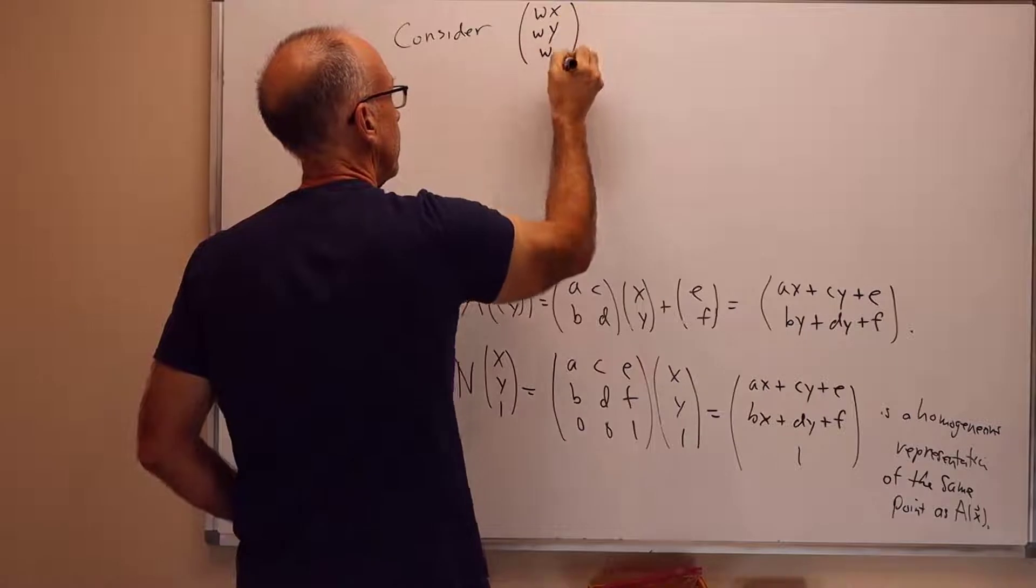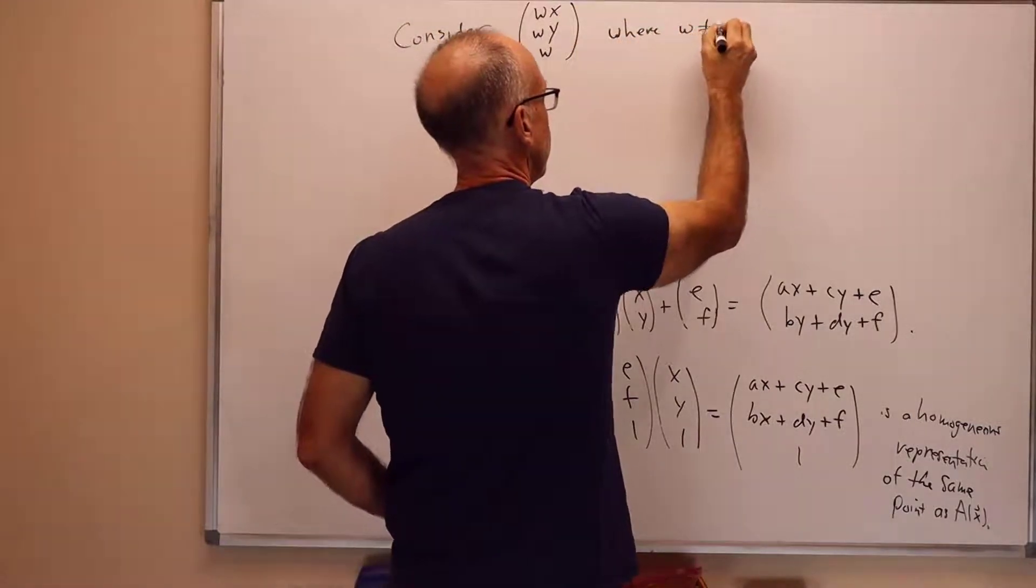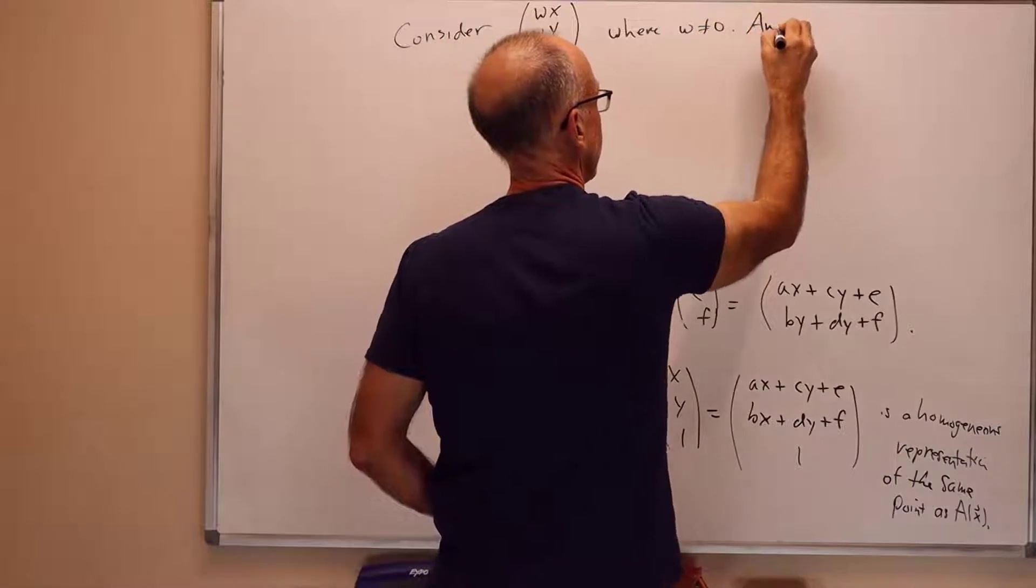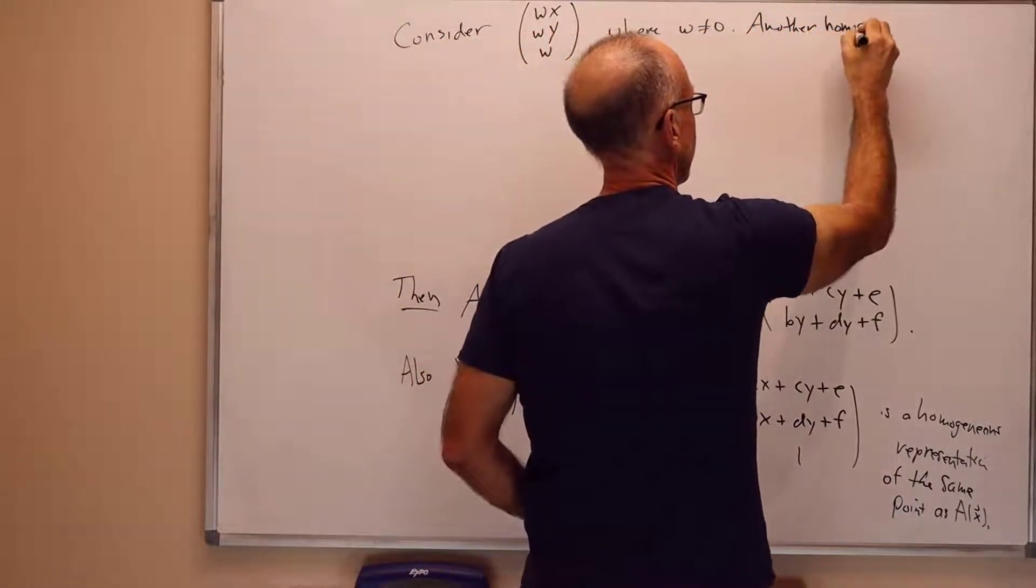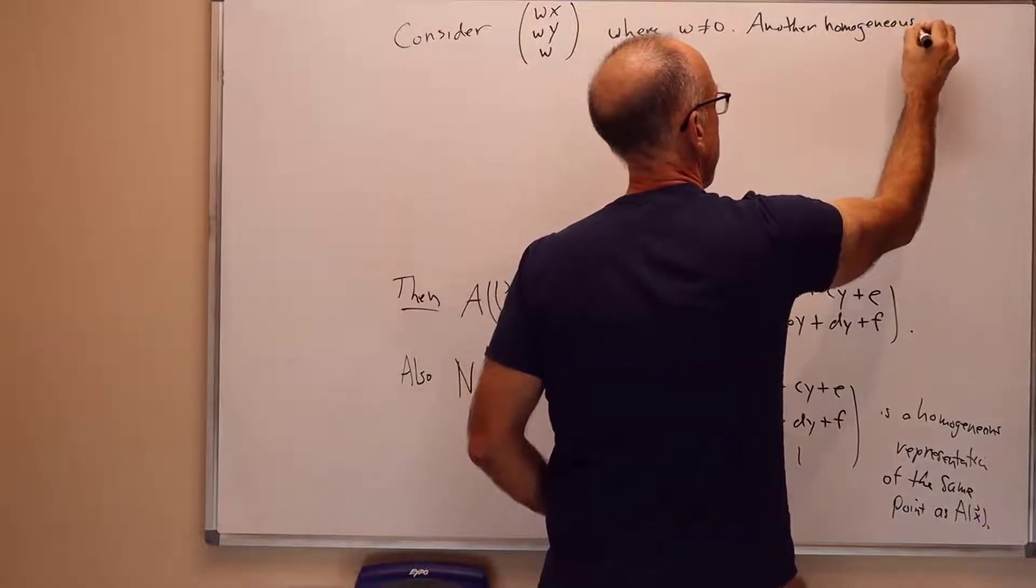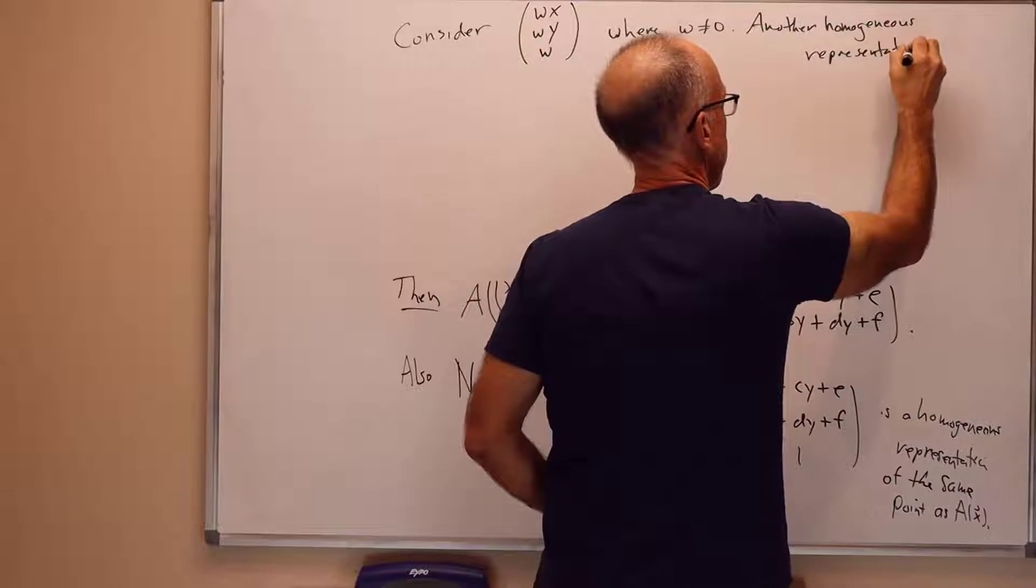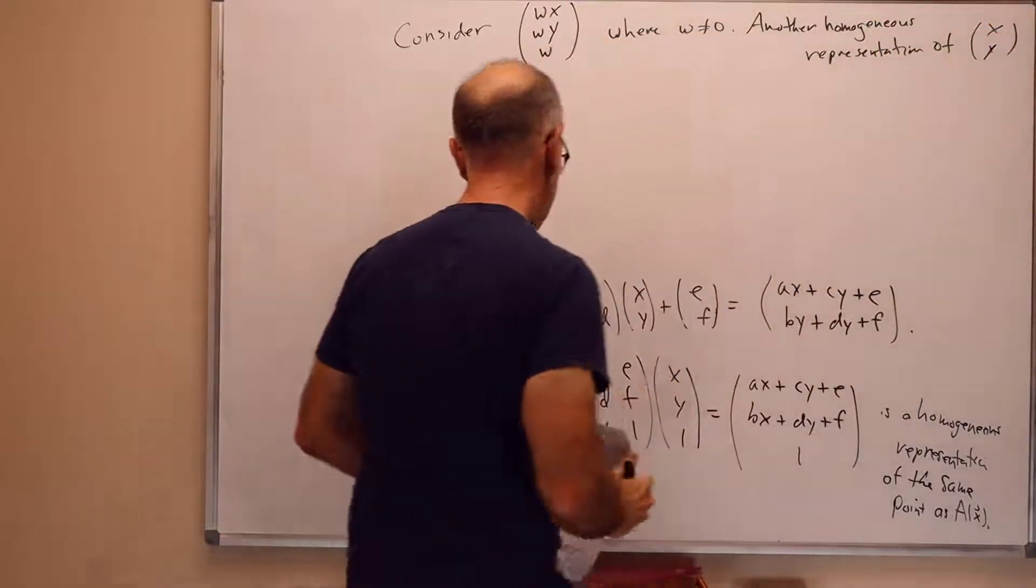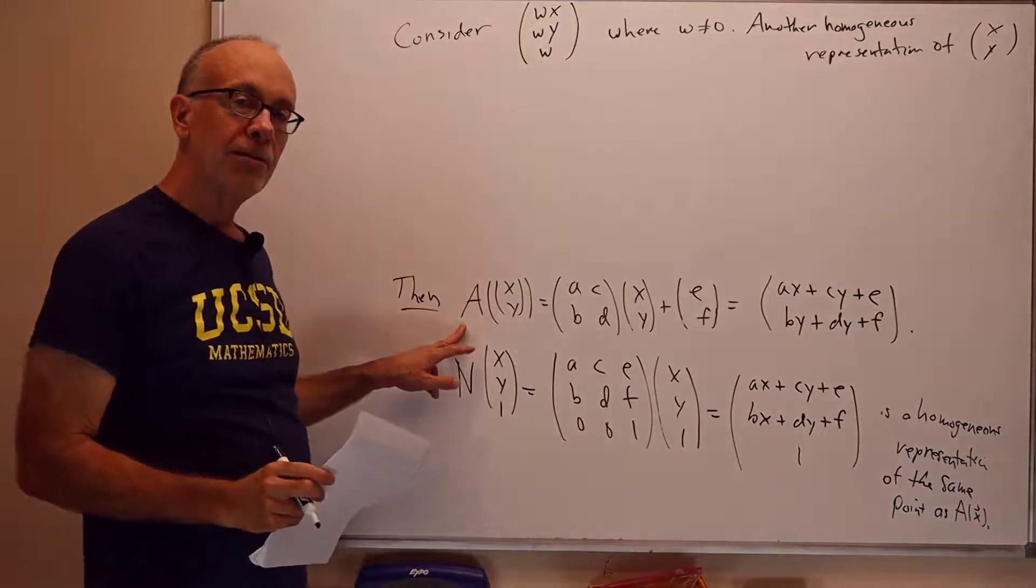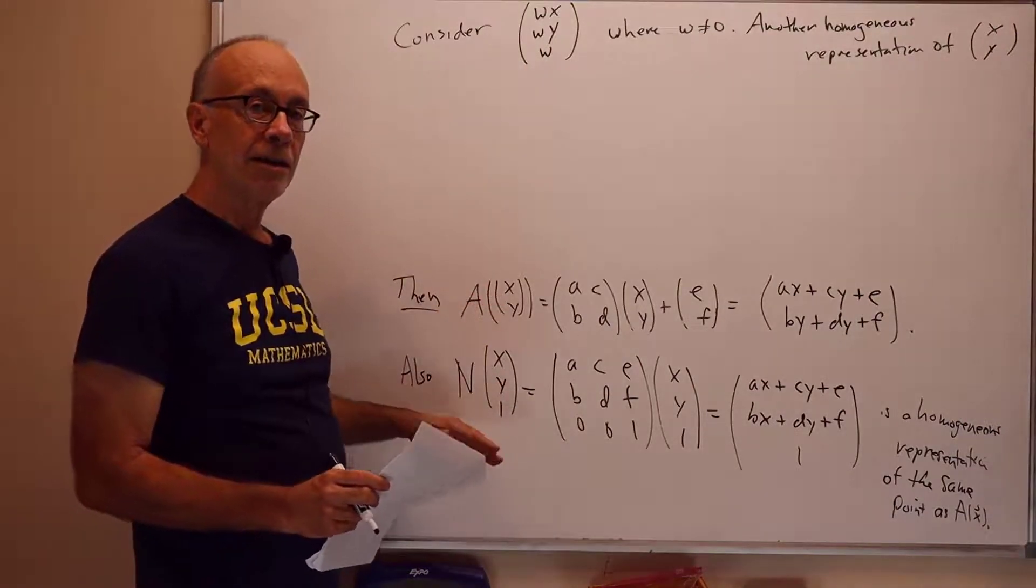Let's consider Wx, Wy, w, where W is not equal to 0. This is another homogeneous representation. In fact, it gives all homogeneous representations of the point x, y. And we're interested in, what does the transformation A do to the point x, y? And how does N act on those transformations?